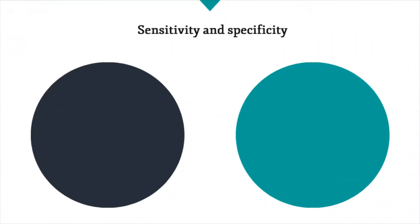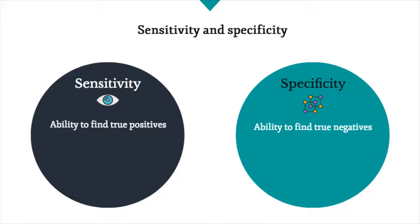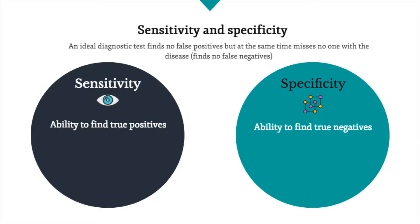There are two types of commonly reported essential measures of diagnostic accuracy. These are sensitivity and specificity, often defined as the test's ability to find true positives for the disorder — sensitivity — or true negatives for the disorder — specificity. An ideal diagnostic test finds no false positives, but at the same time misses no one with the disease, i.e., finds no false negatives.